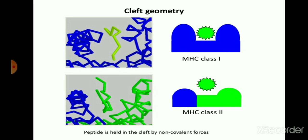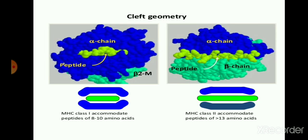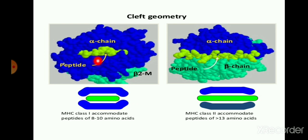The peptide is held in the cleft by non-covalent forces, which strongly bind the antigen peptide. In this figure you can see the alpha chain, the alpha 2 chain, and the beta-2 microglobulin protein which is present in the MHC class 1 molecule. Basically this is the peptide of the antigen which is accommodated in the structure of MHC class 1. This peptide of 8 to 10 amino acids is presented towards the T cells by the MHC class 1 molecule.